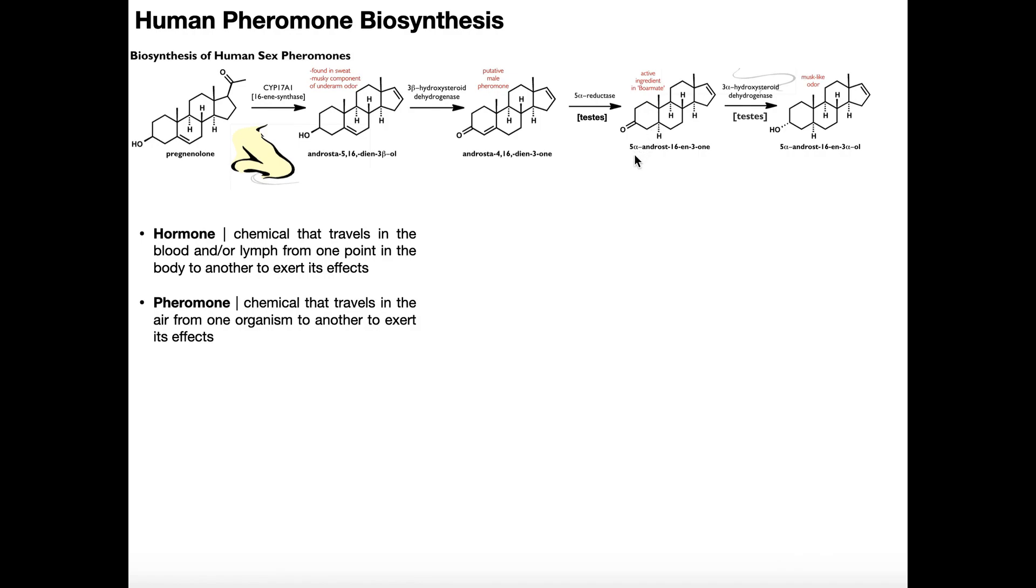There's no double bond here anymore. This is 5-alpha androstenone. This compound is also a pheromone, and it's more potent than androstadienone. So 5-alpha reductase gets rid of that double bond, and that actually increases the potency of the pheromone.